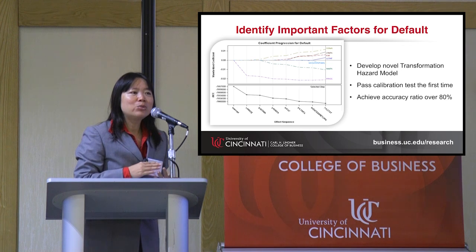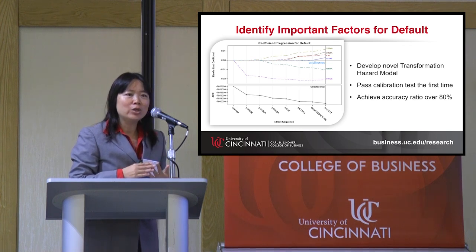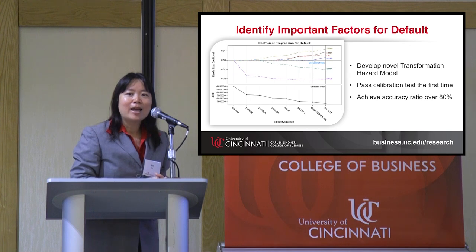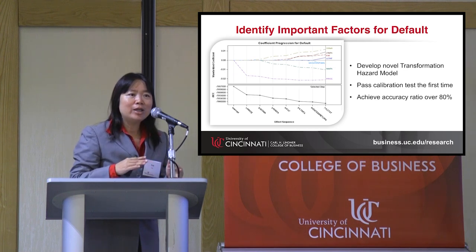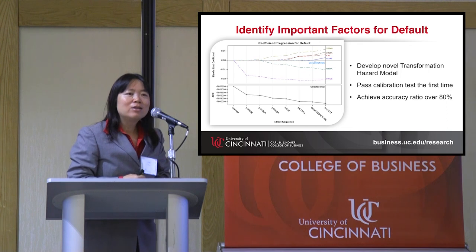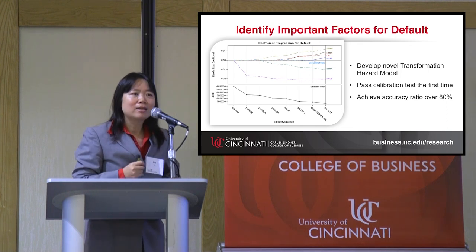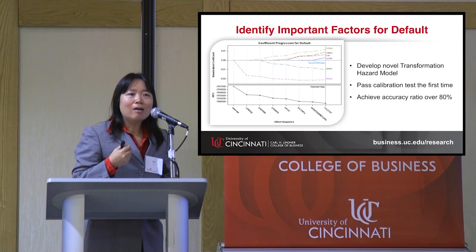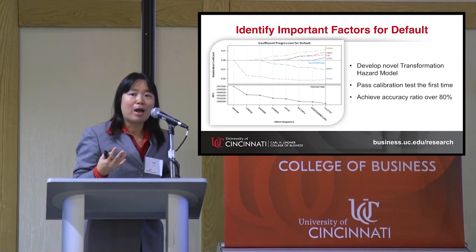There are three key parameters of interest here: probability of default, loss given default, and exposure at default. These are exactly the three key risk parameters regulated by Basel for major banks following the global financial crisis. One natural question to ask is: what are the important predictors? Ultimately, we want to be able to accurately estimate these parameters.